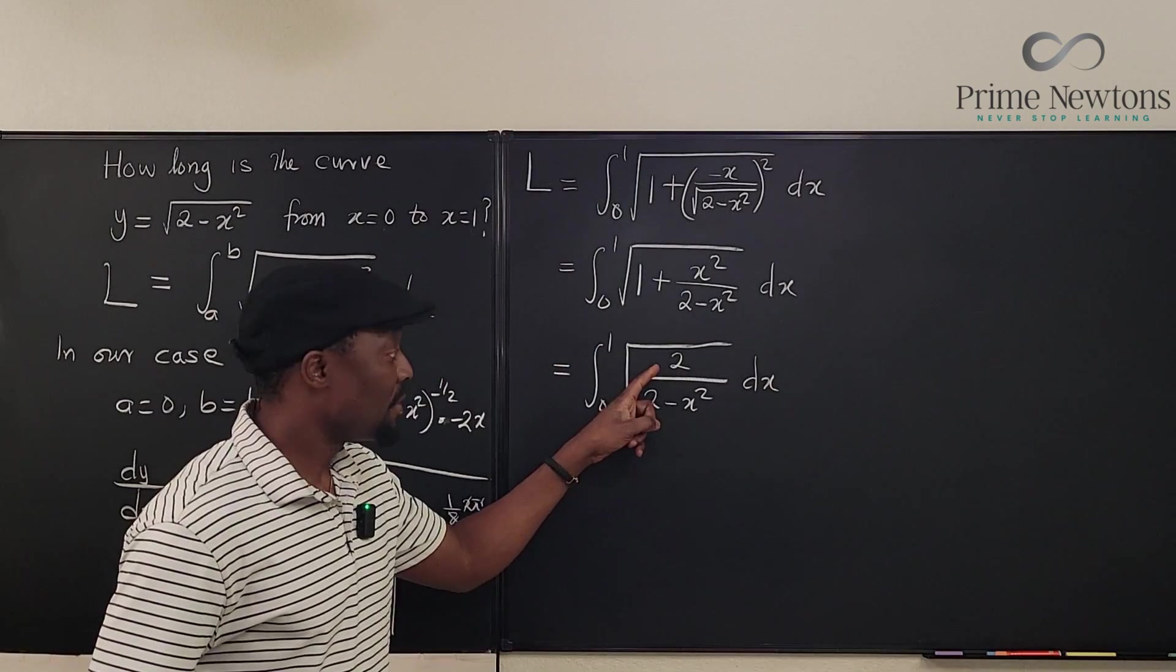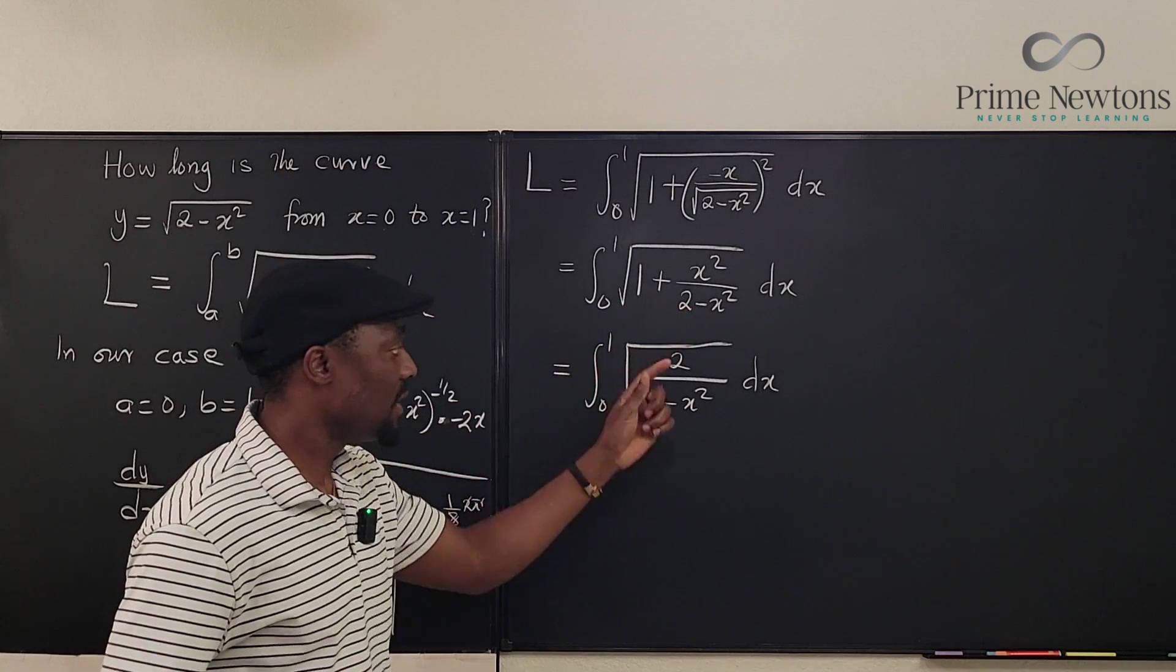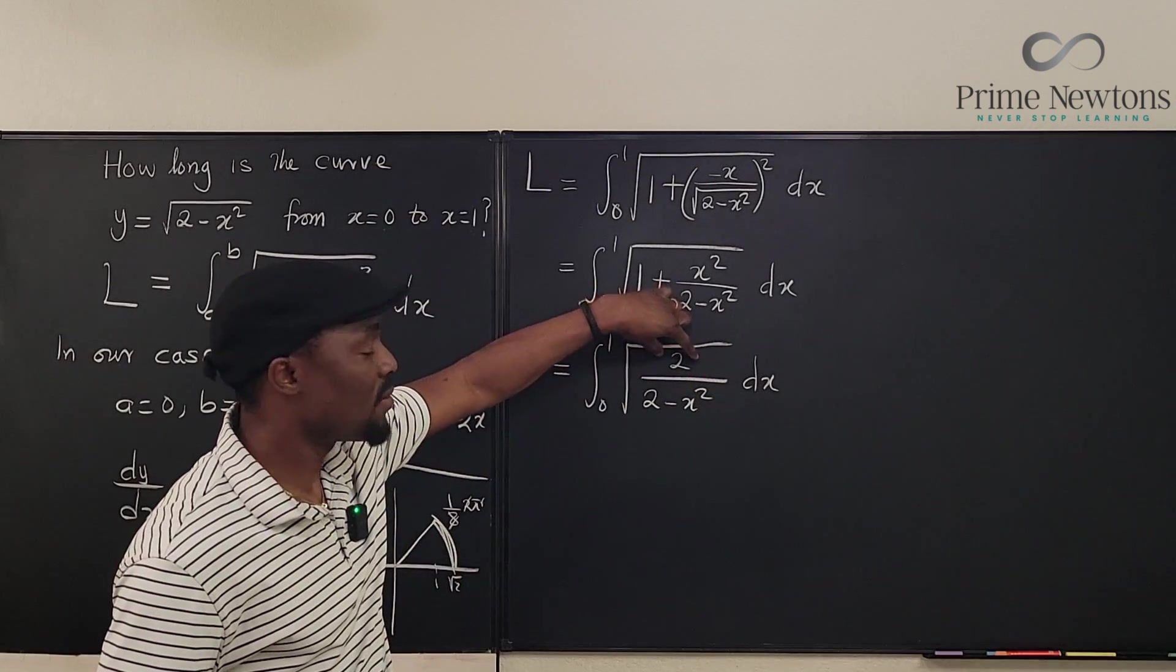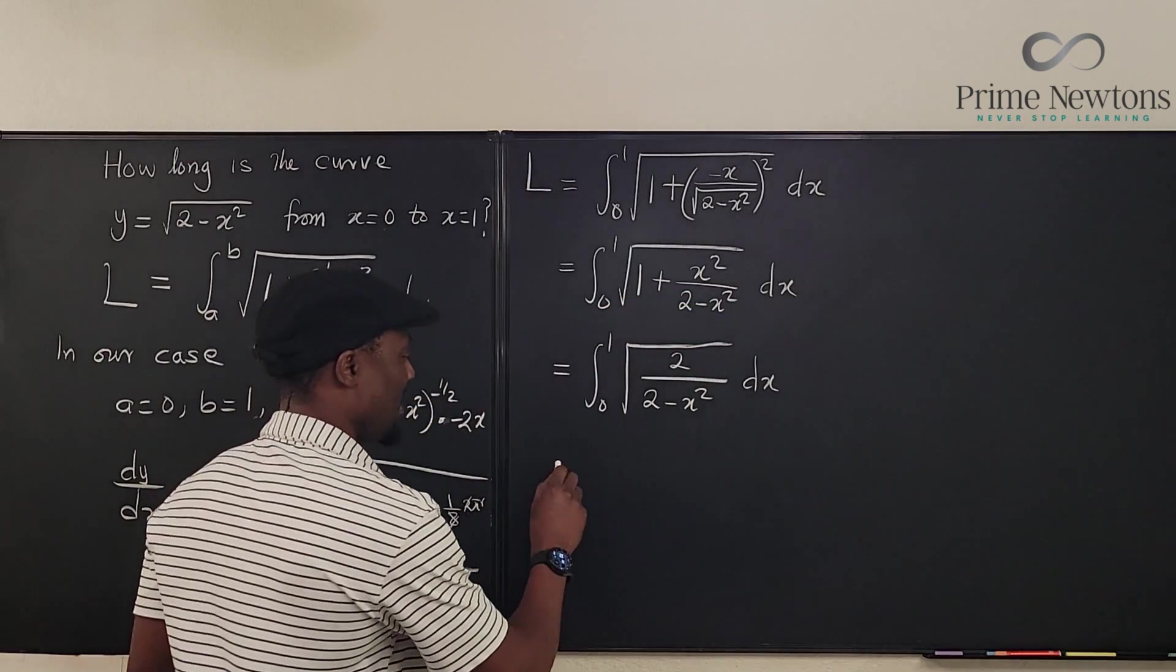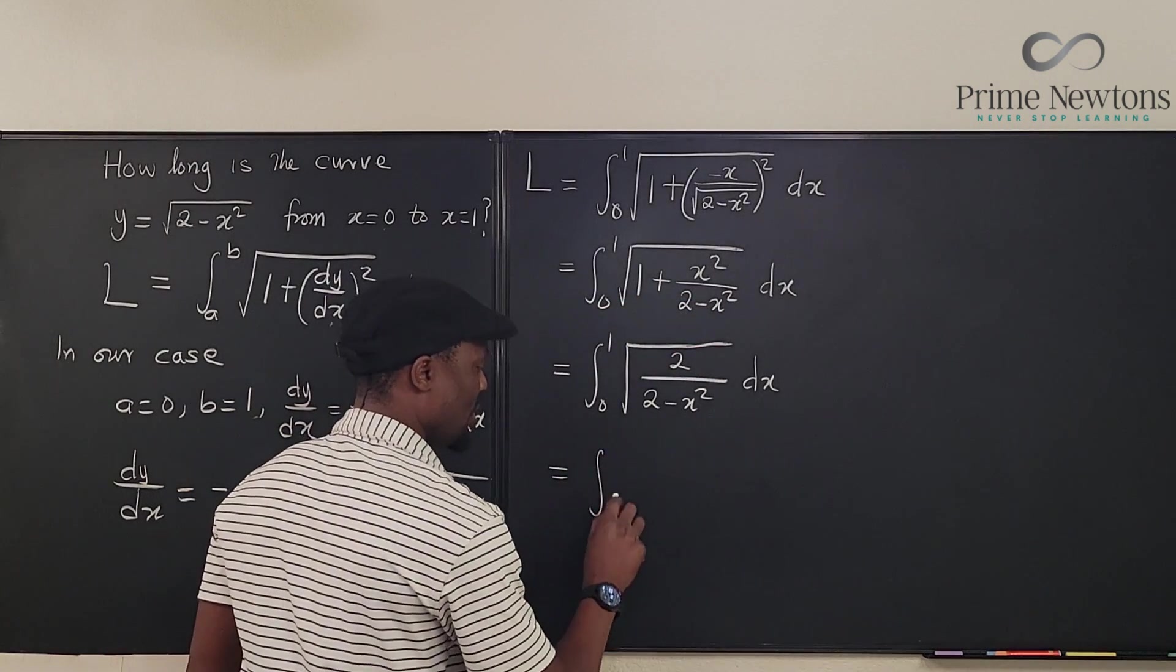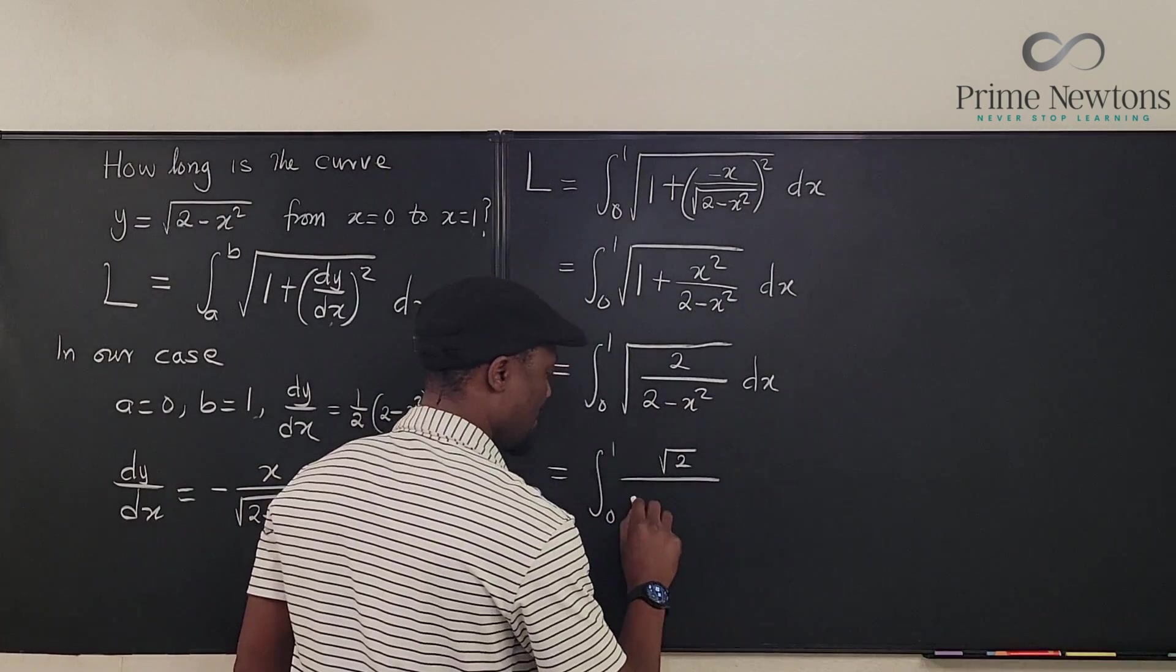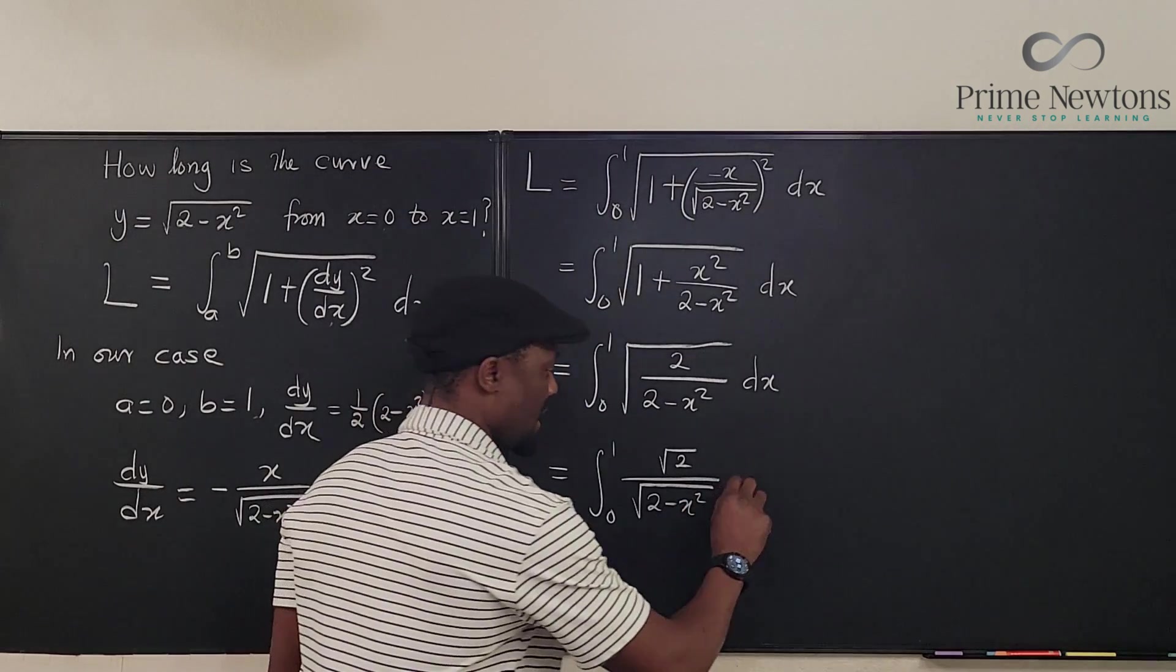I'm gonna give the square root to the top and the bottom so that on top, I'm gonna have square root of 2. And under, I'm going to have square root of (2 - x²). And the square root of 2 I have here, I'm gonna move it all the way. I can leave it there, actually. So let's do it this way. 0 to 1. Then I have the square root of 2 over the square root of (2 - x²) dx.